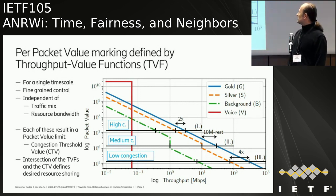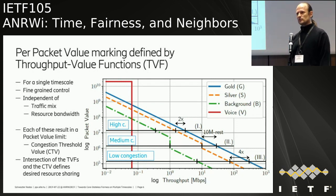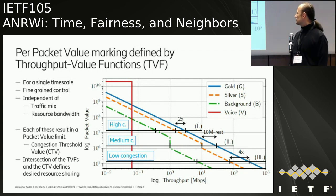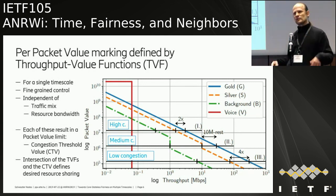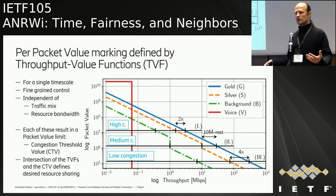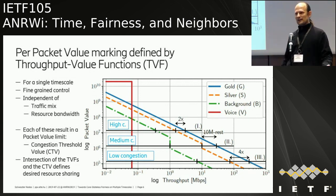In high congestion, we want gold flows to get twice the throughput of silver flows. In low congestion, gold flows get four times the throughput. In medium congestion, when silver flows already reach 10 Mbit/s, gold flows can't get four times but instead get something between two times and four times. The rationale is to have a minimum throughput target: until that minimum is met for the lower priority flow, we shouldn't prioritize the higher priority flow too aggressively.